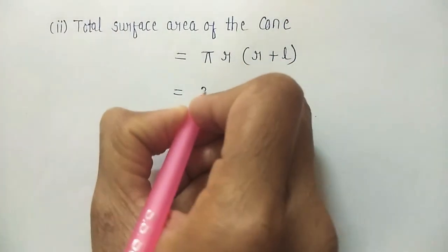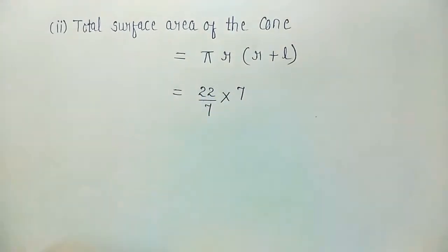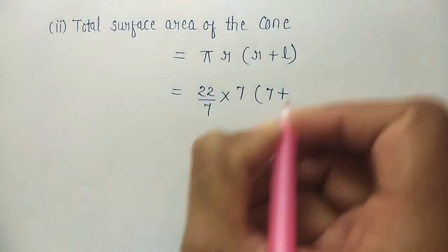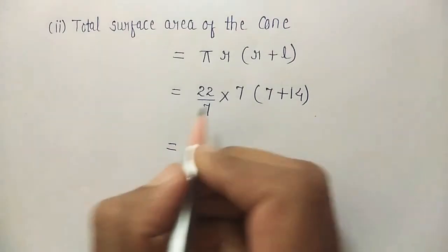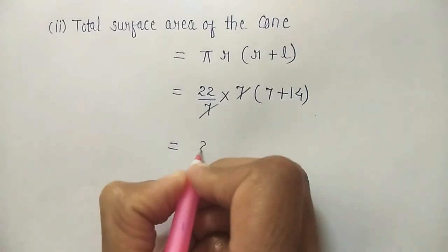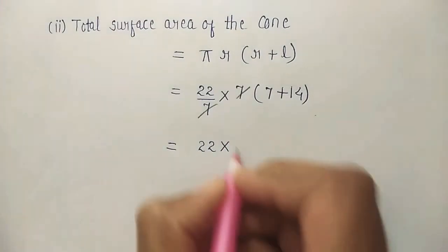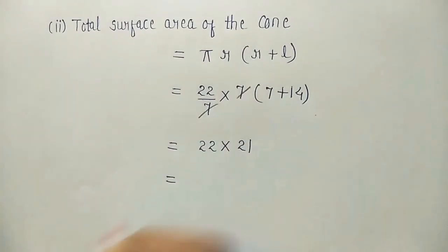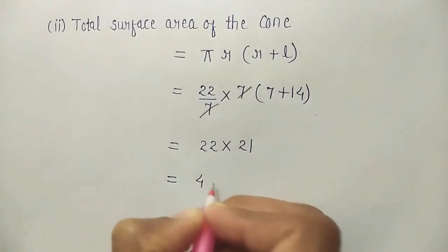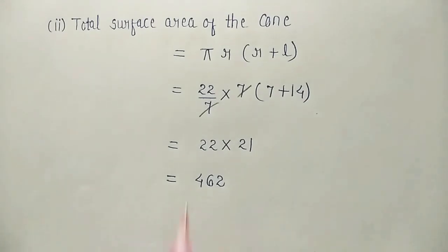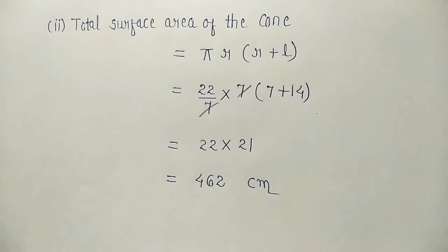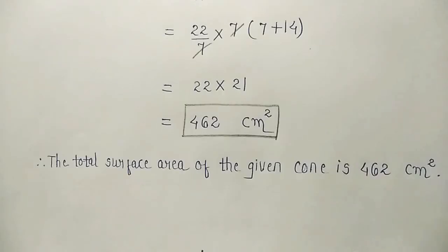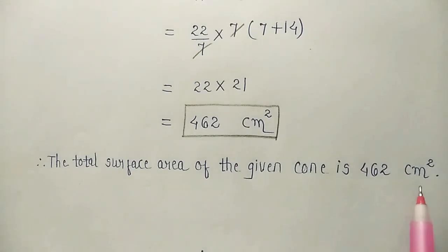Putting in the values: pi is 22 over 7, r is 7, in bracket r is 7 plus l that is 14. The 7 in the denominator and the r of 7 cancel each other. So we have 22 multiplied by 7 plus 14, that is 21. So 22 into 21 gives us 462. All measurements are in centimeters and this is area, so the unit is centimeter squared. Therefore the total surface area of the given cone is 462 centimeter squared.